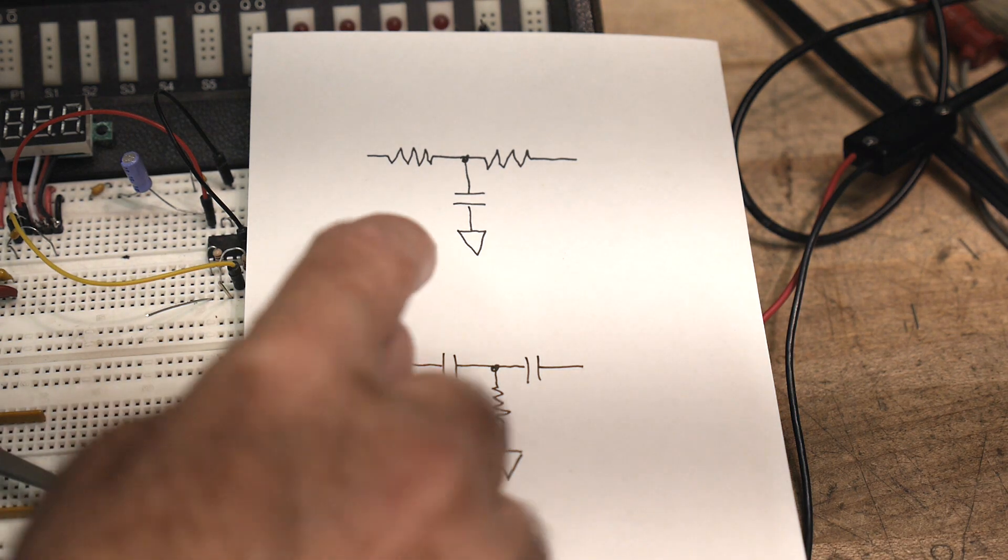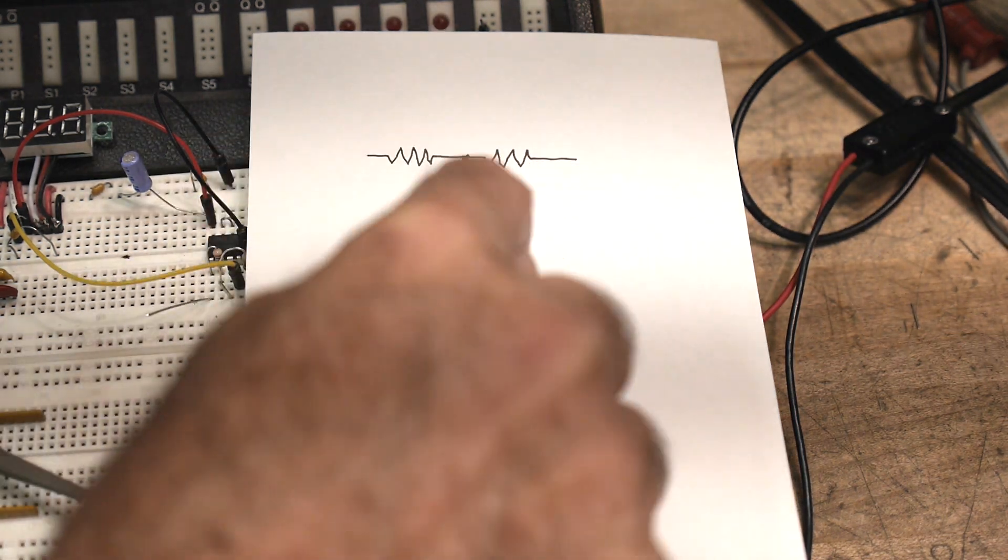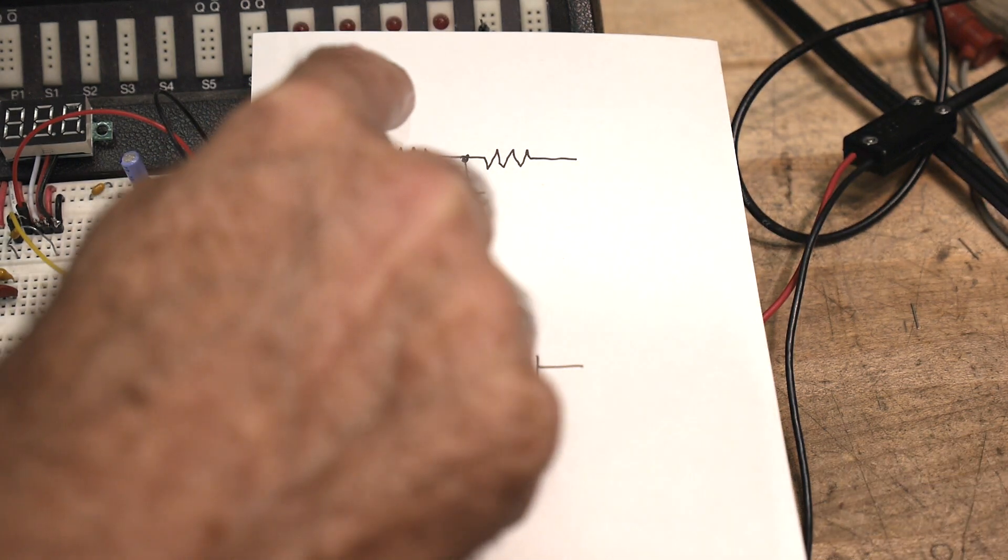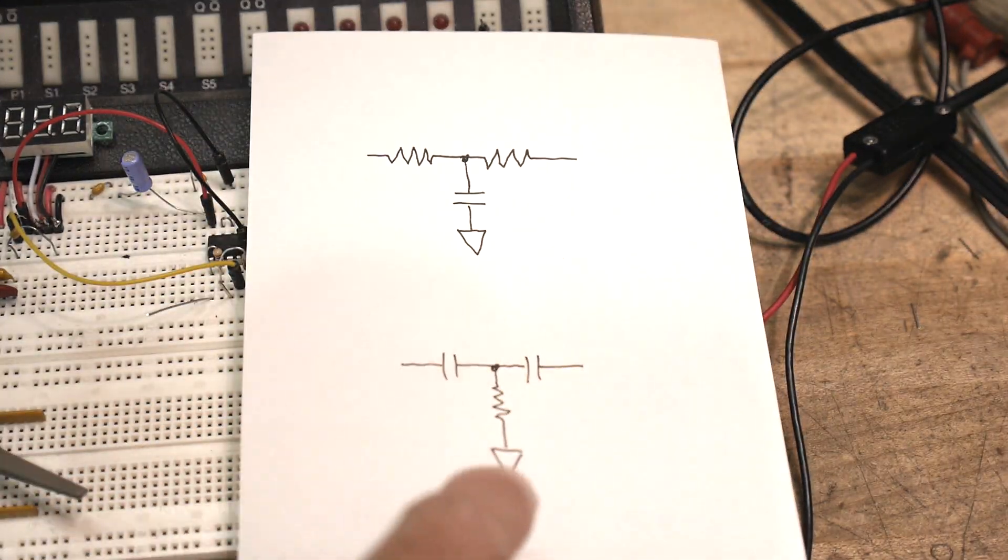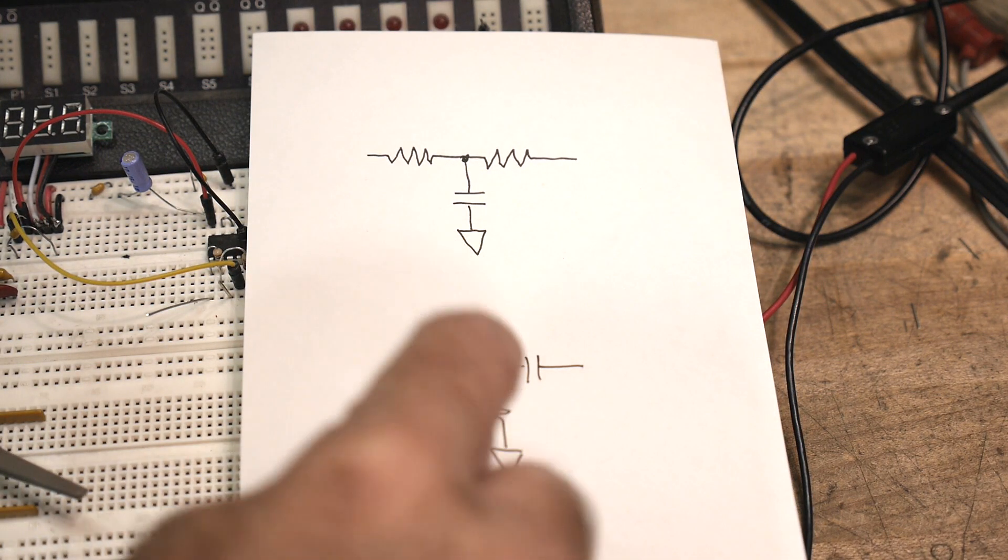Let's take a look at a couple of filters. These are called T filters because they're shaped like a T. This one has a resistor-resistor-capacitor. This one has a capacitor-capacitor-resistor.